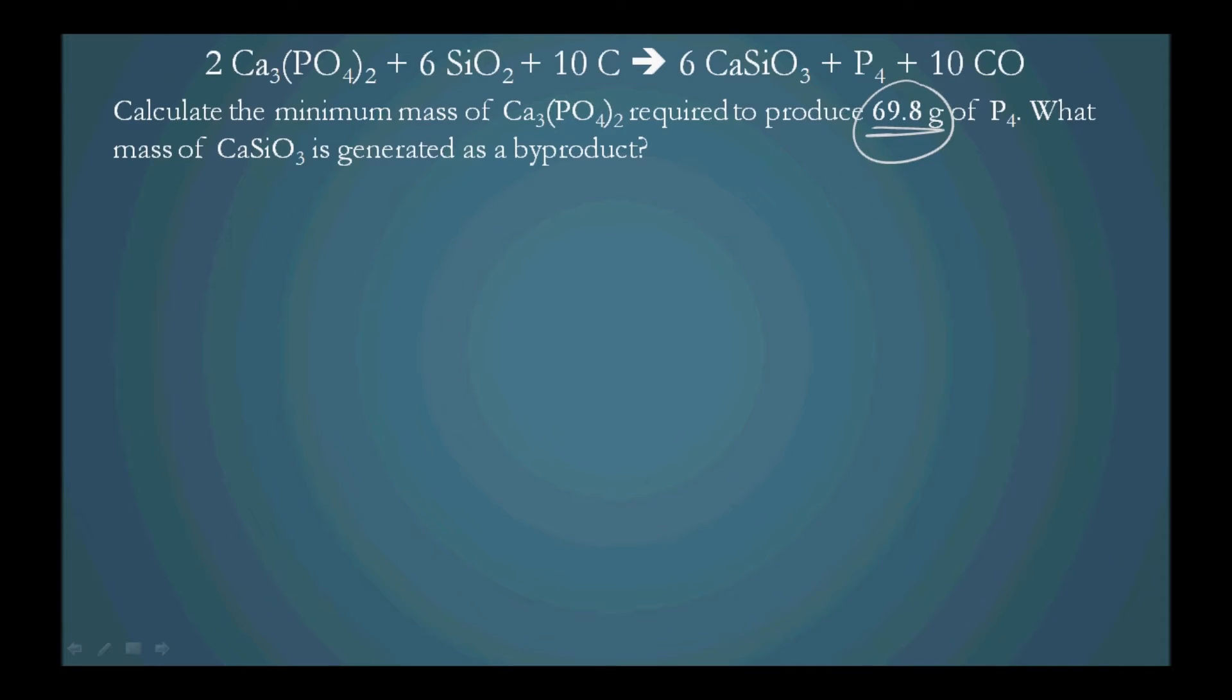The minimum amount required to produce this must be, we must be able to convert the product here, P4, into the reactant through stoichiometric principles in order to find out exactly how much mass of Ca3(PO4)2 is required. So let's start. We begin by putting down our value of our desired product, 69.8 grams of P4.